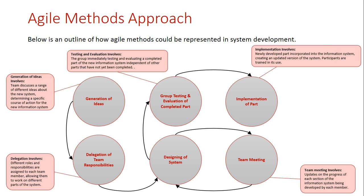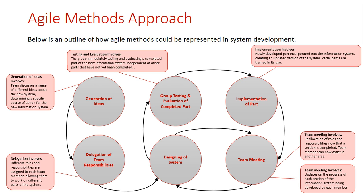Once a new part gets created, the rest of the team continues working on the project. There would need to be another team meeting because those who completed their part need to be allocated into another part being worked on by other members of the team. In order to keep the agile method speedy, we're not going to have someone sitting around doing nothing — they need to be reallocated and working on a different part. Essentially, all the parts get released when they are completed, each time creating a new version until finally the full system is developed and implemented.